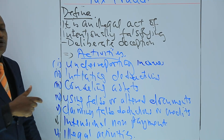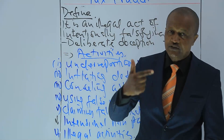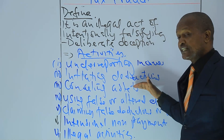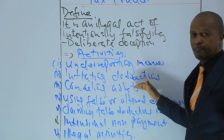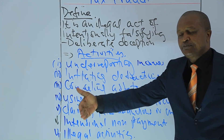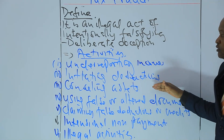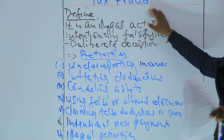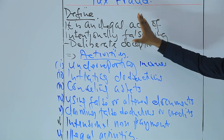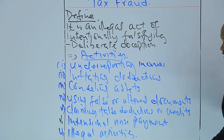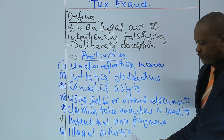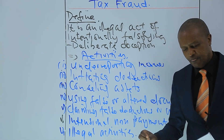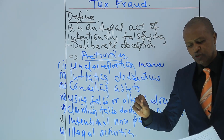Tax fraud differs from tax avoidance, which is a legal practice of using the tax regime to find ways to reduce the amount of tax payable while staying within the letter and spirit of the law. Tax evasion is a subset of tax fraud and refers to the illegal methods used to avoid paying taxes. To help us understand these subjects deeply, we will answer a few questions — the first being: what are the key elements that constitute tax fraud, and how does it differ from the legal practice of tax avoidance?